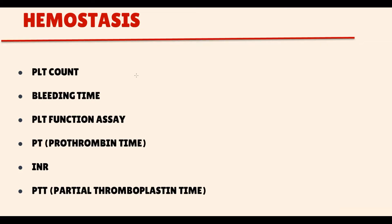To assess hemostasis, we use six values. They are divided into two groups based on which stage of hemostasis they assess. To explain the logic behind these methods, we have briefly recalled the major steps in hemostasis.